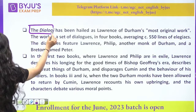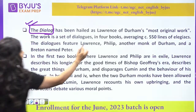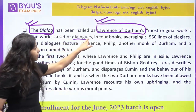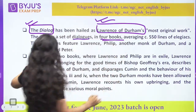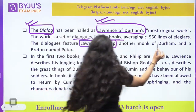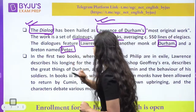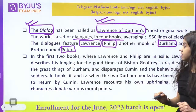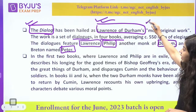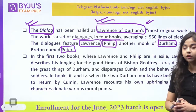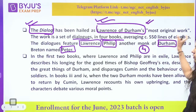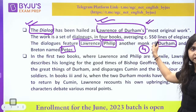Lawrence of Durham's Dialoguee — you have dialogues in four books altogether. The dialogues tell you about Lawrence, about Philip, about one monk of Durham, and there is a Breton called Peter. What are we able to see? Lawrence of Durham's Dialoguee is having four important people and four books. The first two books — Lawrence and Philip are in exile. Make connections: David Malouf's An Imaginary Life tells you about Ovid in exile. David Malouf is a very important Australian writer.